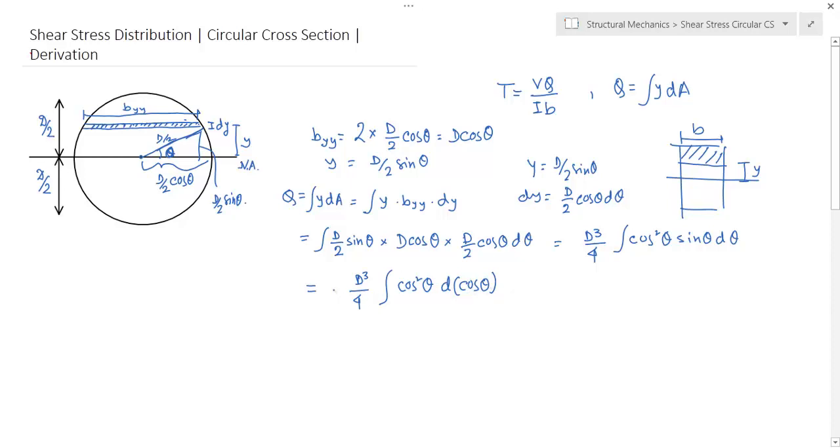You can write cos² theta d(cos theta). d(cos theta) is minus sin theta d theta, so write down a minus here. So minus D³/4 times cos³ theta by 3.